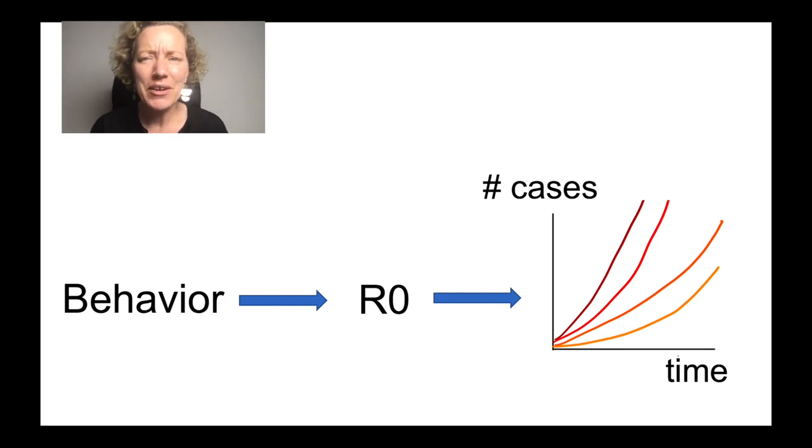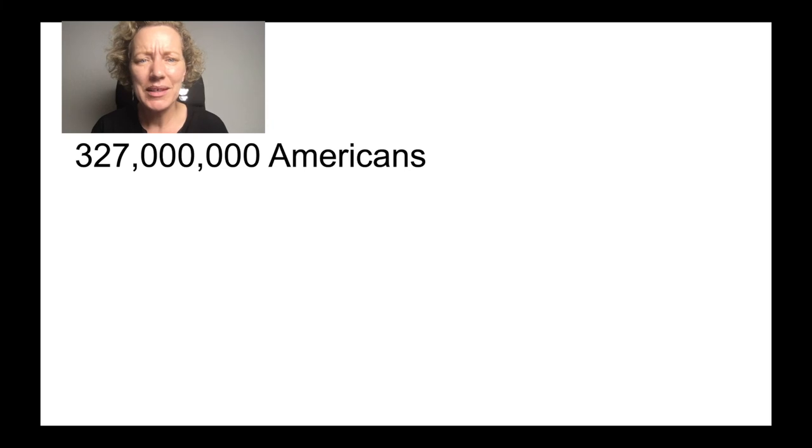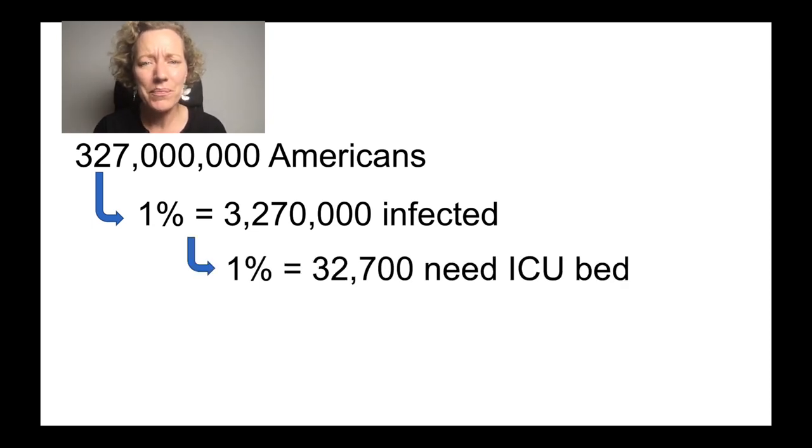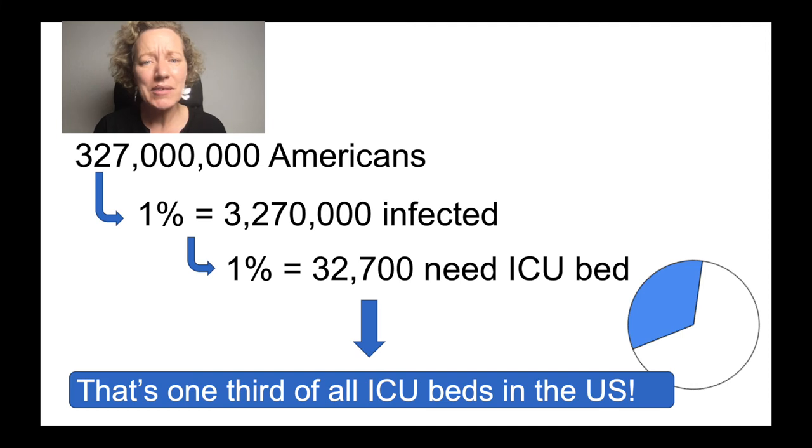Imagine that 1% of the Americans were infected at the same time. That's 3.3 million people. Then, imagine that 1% of those people need a bed in an ICU. That's 33,000 people. Well, that's more than one-third of all ICU beds in the country. And we really need these intensive care units for the regular patients. We don't have that space. So we need to slow the epidemic so that we have enough hospital beds, doctors, and nurses to take care of everyone.